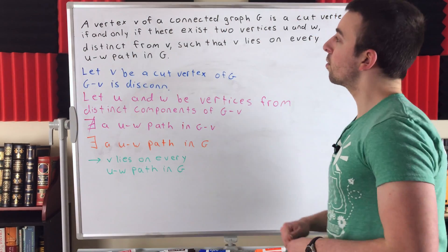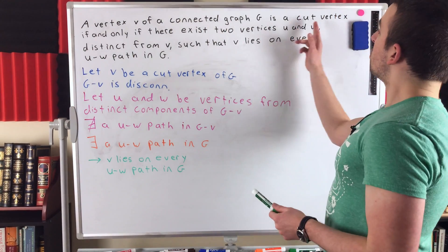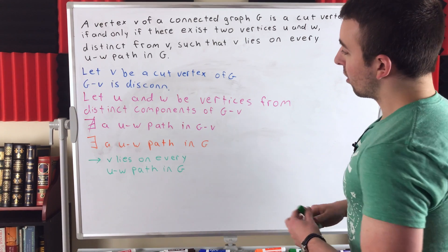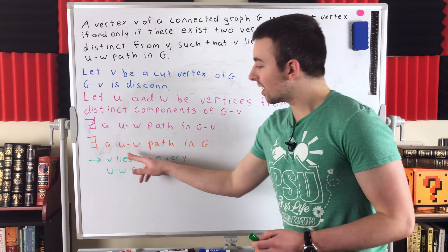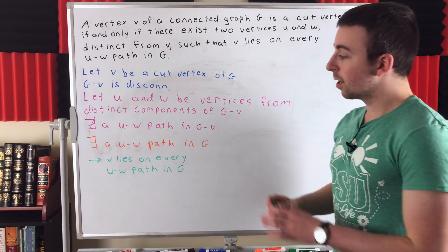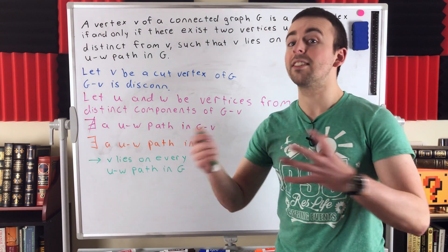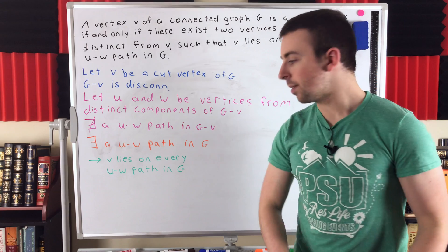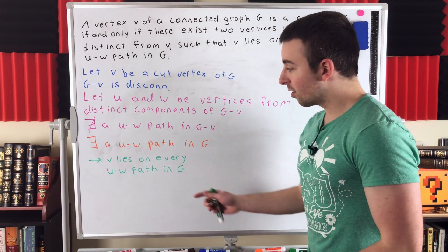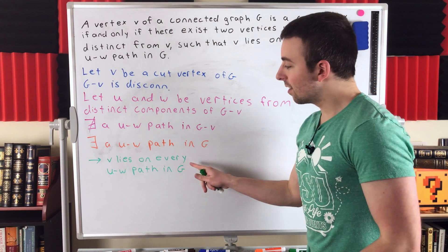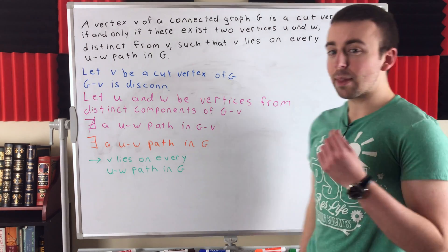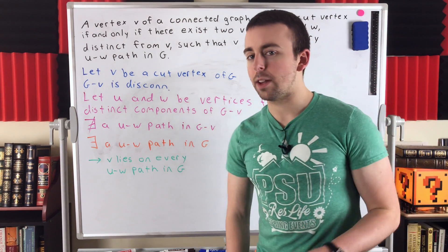So that's the first direction of the proof. We assumed that V was a cut vertex and showed that there must exist two vertices distinct from V — U and W — such that V lies on every UW path in the graph G.